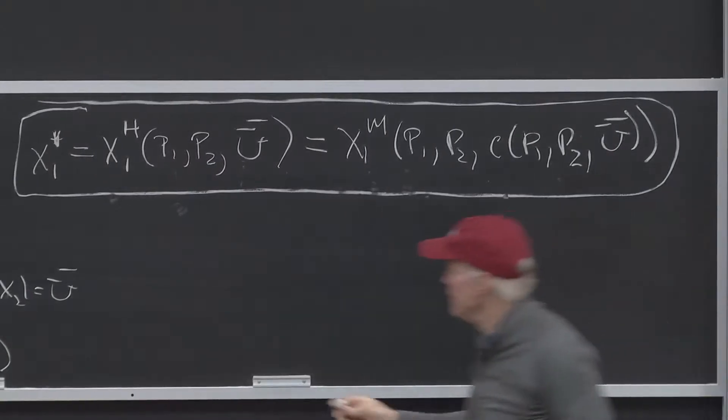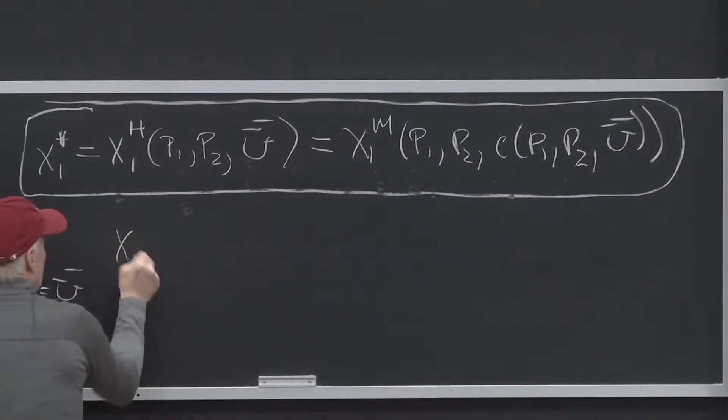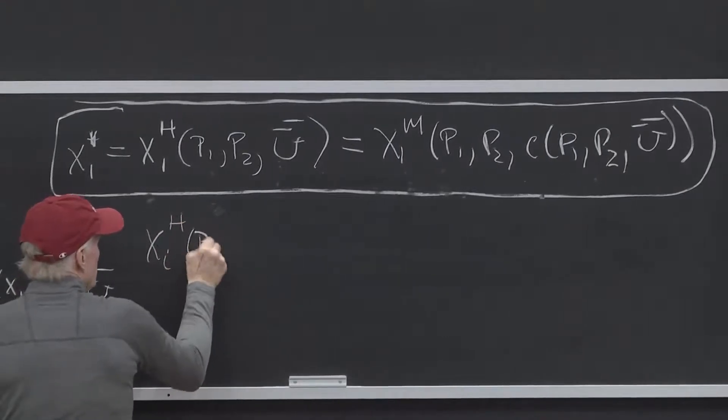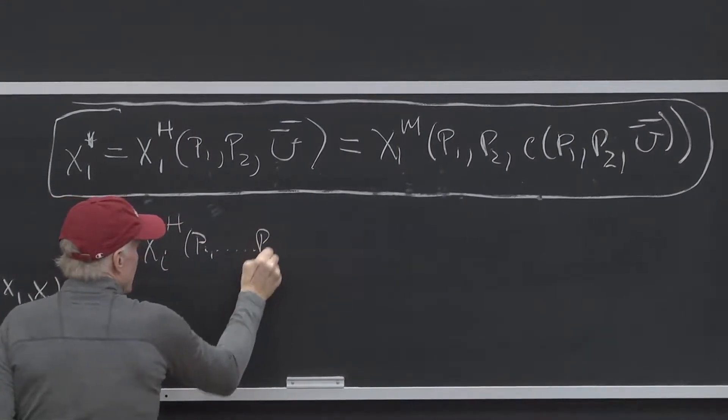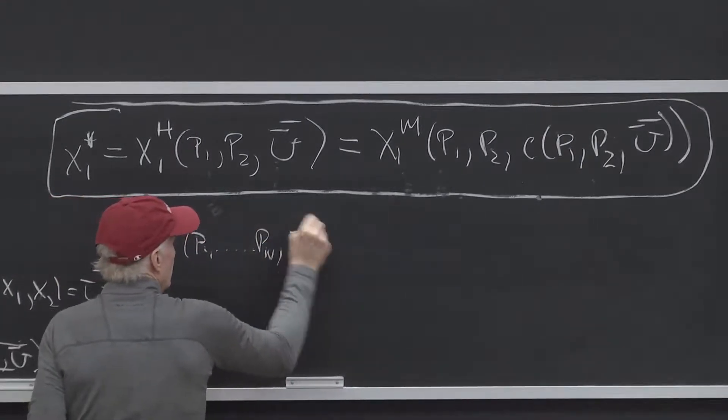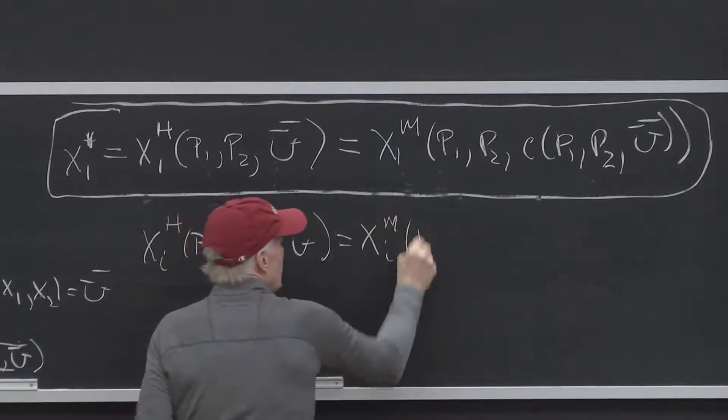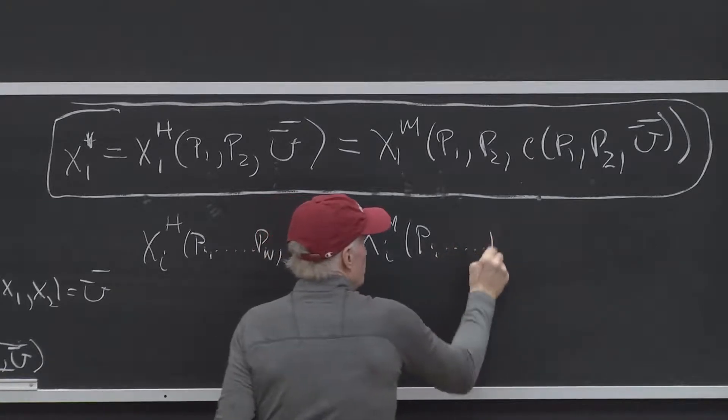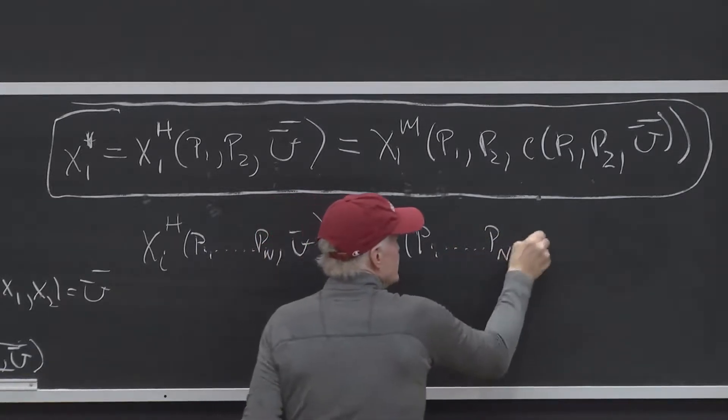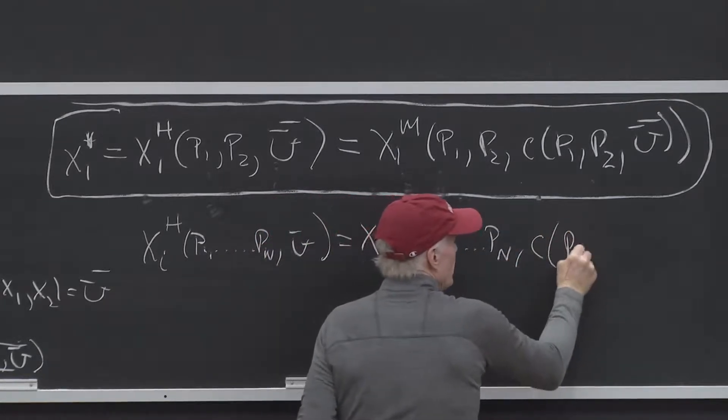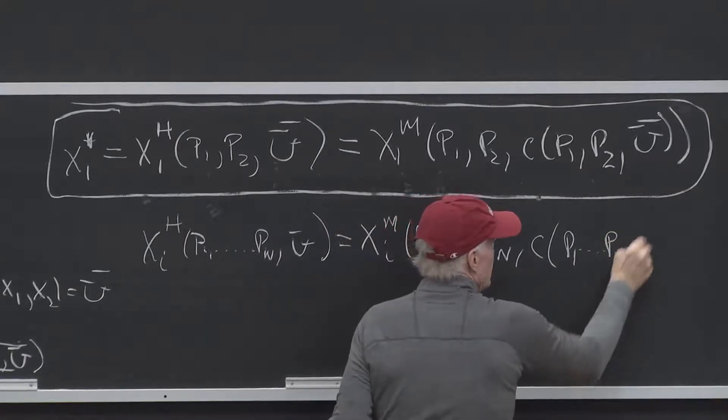So more generally, XIH of P1 up to PN U bar has to be equal to XIM of P1 up to PN C of P1 up to PN U bar.